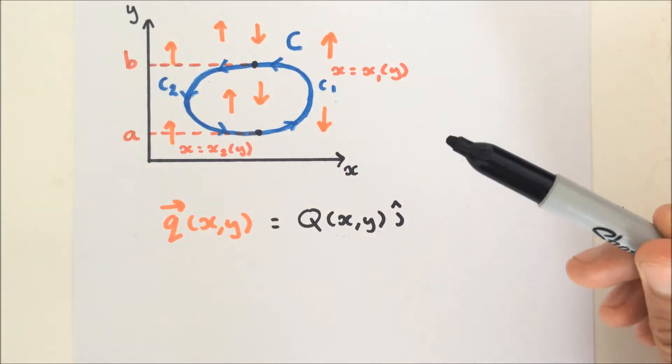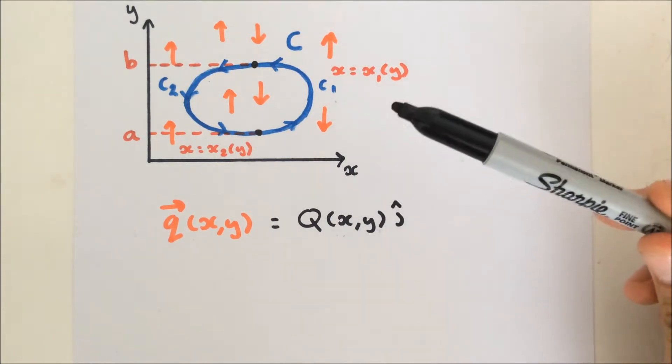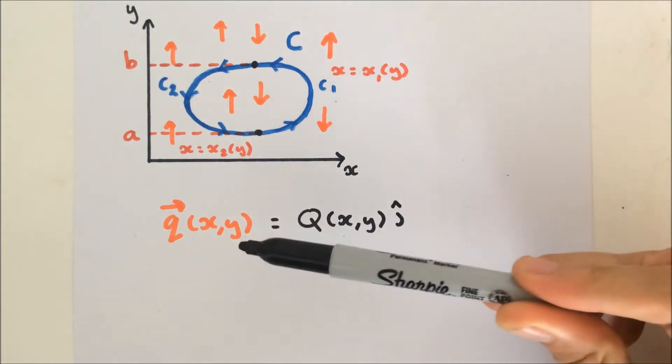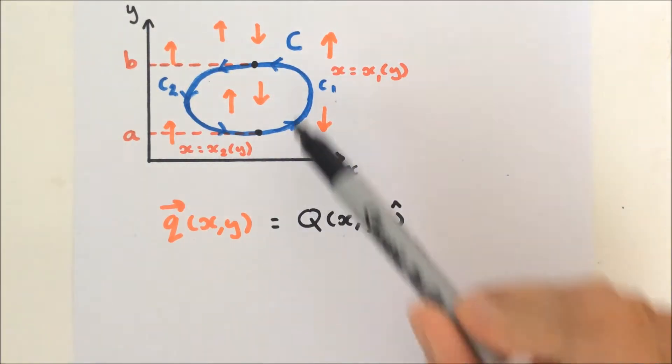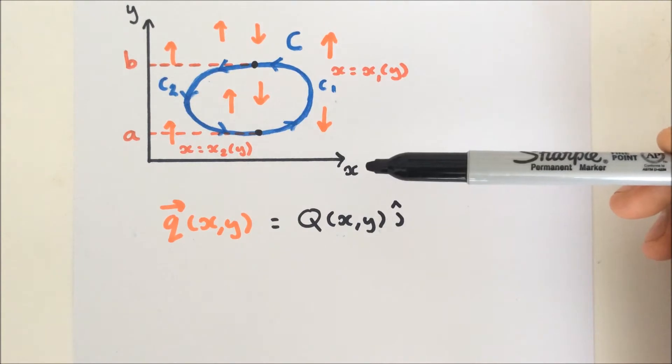So in the last video, we derived Green's Theorem for a vector field with only x components. Today we're going to do the opposite, and we're going to look at a vector field Q which only travels in the y direction. So it's pretty much the inverse of what we did before.